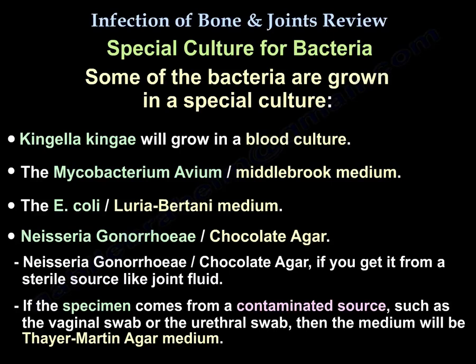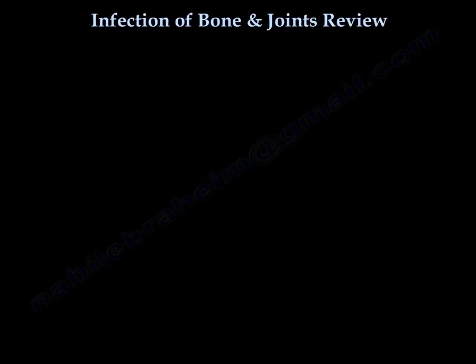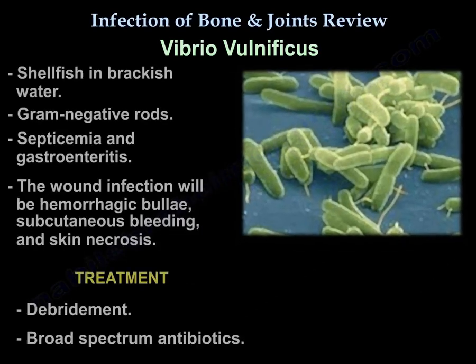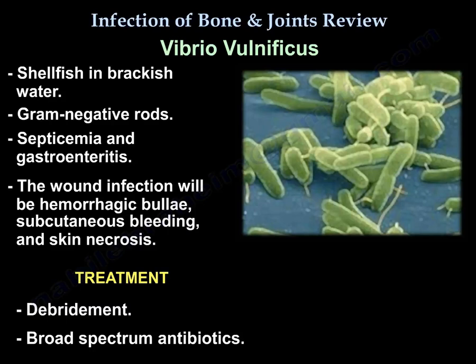Neisseria gonorrhoeae is grown on chocolate agar if the specimen comes from a sterile source like joint fluid, but if the specimen comes from a contaminated source such as a vaginal or urethral swab, the medium will be Thayer-Martin agar. Vibrio vulnificus — found in saltwater and brackish water — is a gram-negative rod causing septicemia and gastroenteritis. Wound infection will be hemorrhagic, bullous, with subcutaneous bleeding and necrosis. Treatment is debridement and broad-spectrum antibiotics.